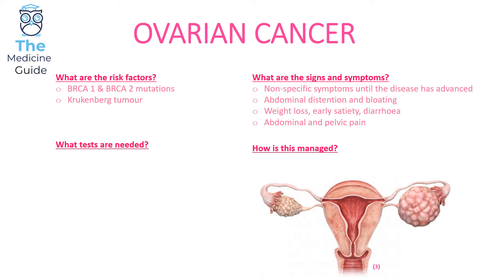In terms of signs and symptoms, ovarian cancer unfortunately has very nonspecific symptoms, and it's not until the disease has advanced that the key signs are really identified. Some of the signs present with ovarian cancer include abdominal distension, bloating, weight loss, early satiety, diarrhoea, and abdominal and pelvic pain. Again, this all sounds very nonspecific and it's not until the disease has advanced that these key signs are really identified.